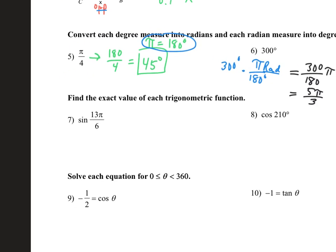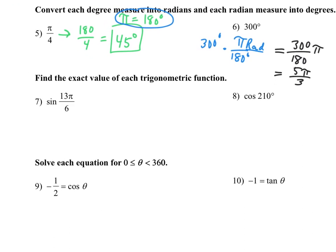These last four problems are going to use unit circle patterns or special right triangles. Let me set up that first quadrant — make sure you have these patterns down because it's going to help answer all of these types of questions. For number 7, we need the sine of 13π over 6. Most of you are probably going to want that in terms of degrees since we're not as familiar with radians. So 13 times 180 over 6 gives me 390 degrees — so we need the sine of 390.